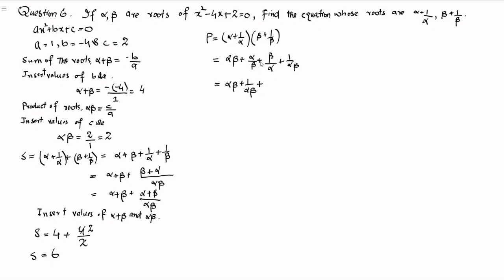We have the value of alpha beta but not the value of alpha over beta or beta over alpha. So we take the LCM of alpha over beta plus beta over alpha, which is alpha beta. Alpha beta divided by beta is alpha, and alpha multiplied by alpha is alpha squared, plus alpha beta divided by alpha is beta, and beta multiplied by beta is beta squared. So we get alpha squared plus beta squared over alpha beta. We do not have the value of alpha squared plus beta squared directly.